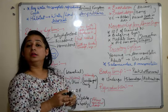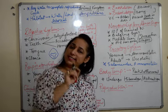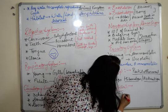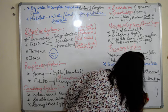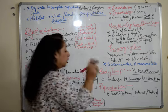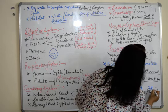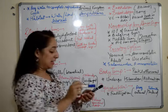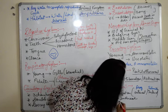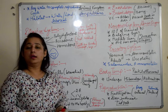Reproduction is the last system to discuss. The main important thing is that they undergo both external and internal fertilization. The example for external fertilization is the frog, and for internal fertilization it is the salamander. Development is indirect — meaning there is a larval stage, the tadpole larva. These are all the systems of amphibians.